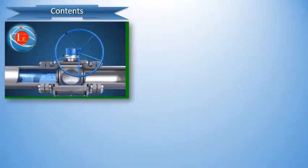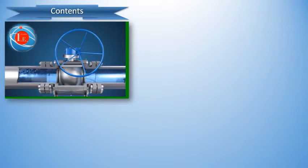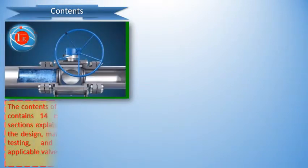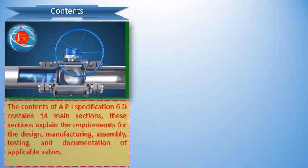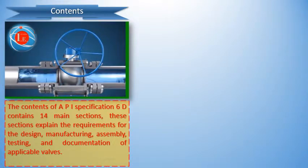The API Specification 6D contains 14 main sections. These sections explain the requirements for the design, manufacturing, assembly, testing, and documentation of applicable valves.